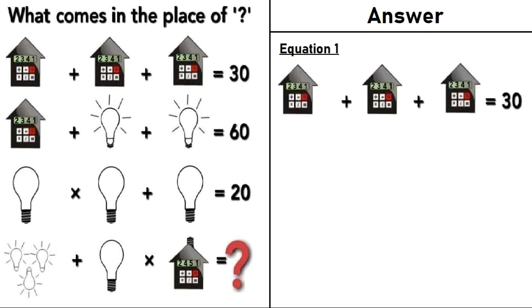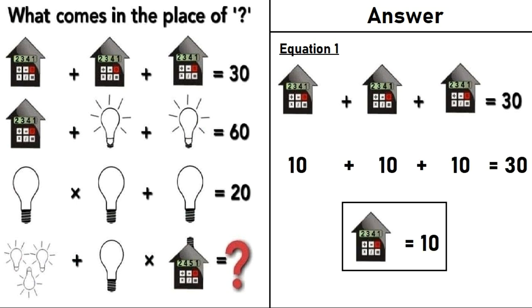Let's take equation number 1 which says a house plus a house plus a house is equal to 30. 10 plus 10 plus 10 is equal to 30. A house is equal to 10.